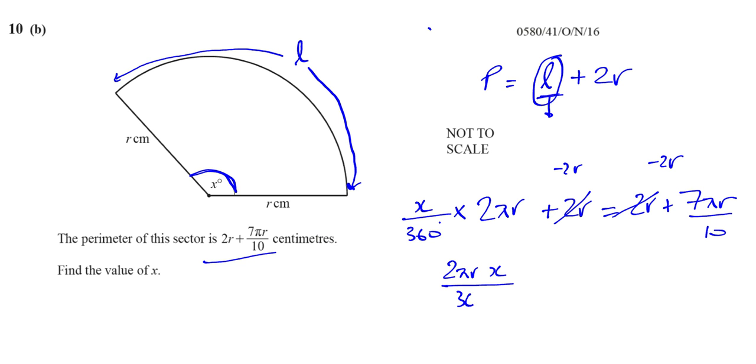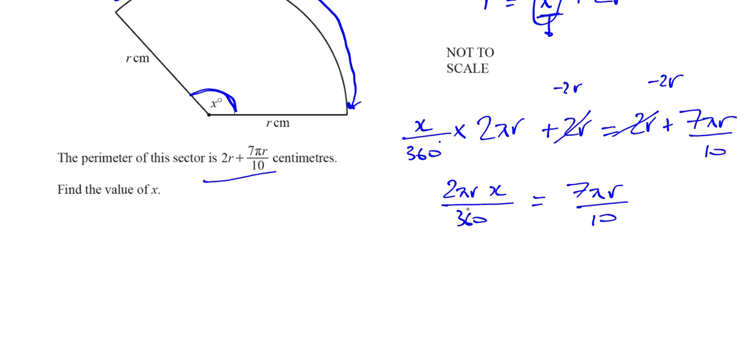We want to find what x is. What I can do first is cancel this 2 and this 360, that gives me 180. Then I can multiply both sides by 180. Now I've got πrx equals... the 10 going to that, you're left with 7 times 18πr.